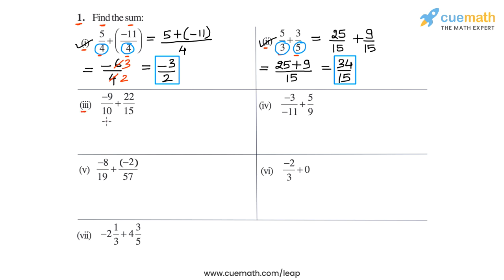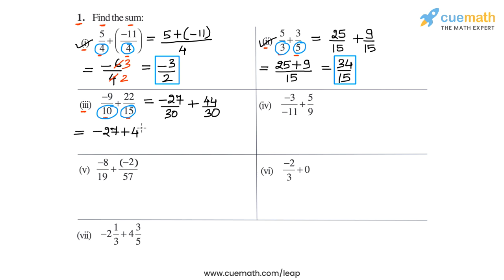Now we come to part 3, where we have to calculate -9/10 + 22/15. The denominators are 10 and 15, and the LCM of the denominators is 30. So let's write both as equivalent rational numbers with denominator 30. So -9/10 can be written as -27/30, and 22/15 can be written as 44/30. Now we add the numerators: -27 + 44 = 17. So we get 17/30. That completes part 3.